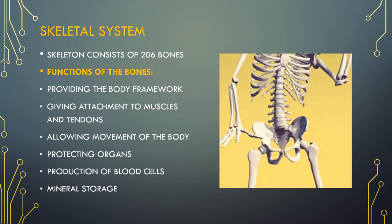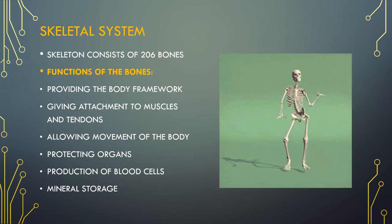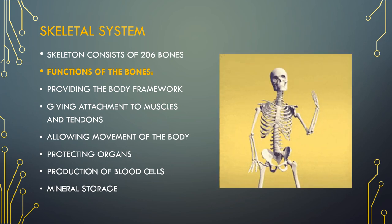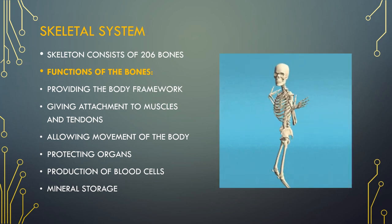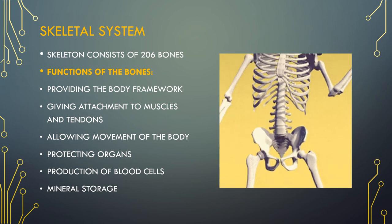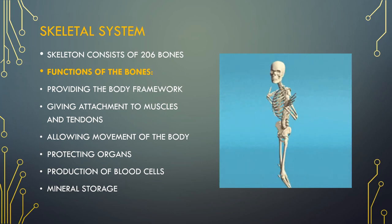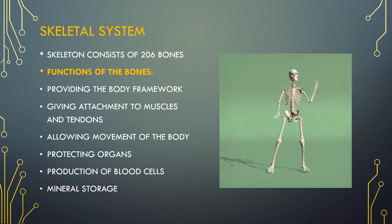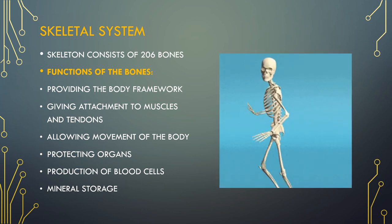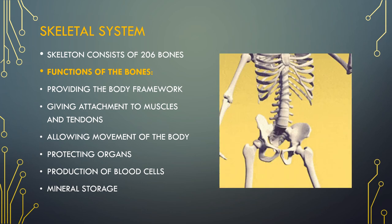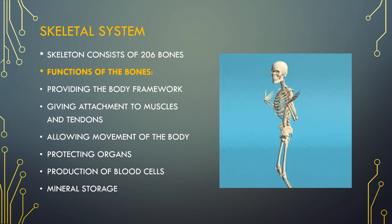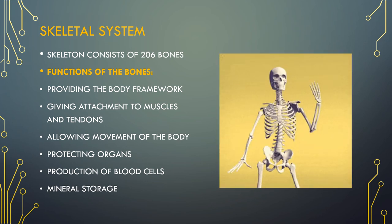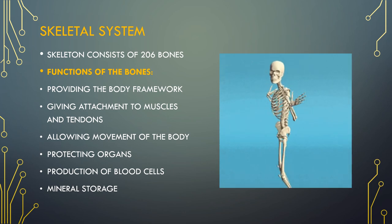An adult skeleton consists of 206 bones. Children's skeletons actually contain more bones because some of them, including those of the skull, fuse together as they grow up. There are also some differences in the male and female skeleton. The male skeleton is usually longer and has a higher bone mass. The female skeleton, on the other hand, has a broader pelvis to accommodate for pregnancy and childbirth.